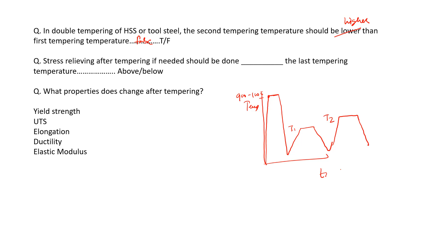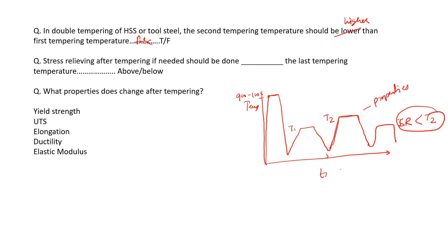If stresses need to be relieved — for example if there is twisting or deformation in the product — we perform stress relieving. The stress relieving temperature SR should be lower than T2, the last tempering temperature. It can be greater than T1 but must be below T2, because the tempering temperature decides the final properties of the material. If we exceed T2, say going to 700°C, the properties will be different.